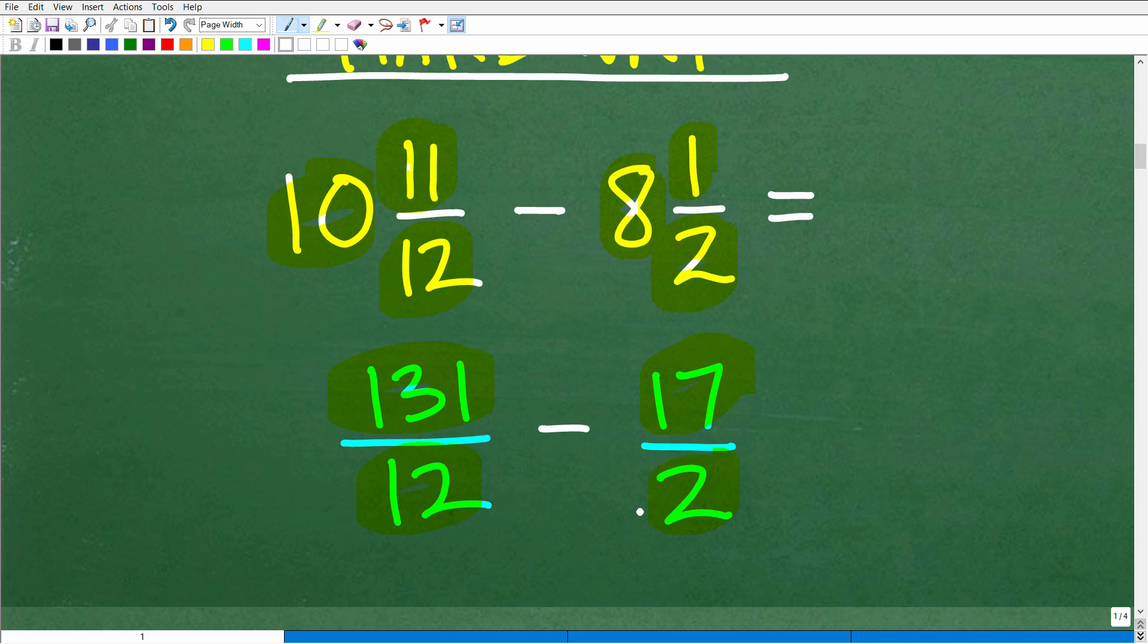Now in this particular problem we don't have common denominators so we would have to find the LCD. Hopefully you recognize the LCD here is 12 so to fix this up we just simply have to multiply this by 6 and then 17 by 6. So we'd have to do some multiplication here and then we would have to track the difference. So this is one approach to doing this problem.